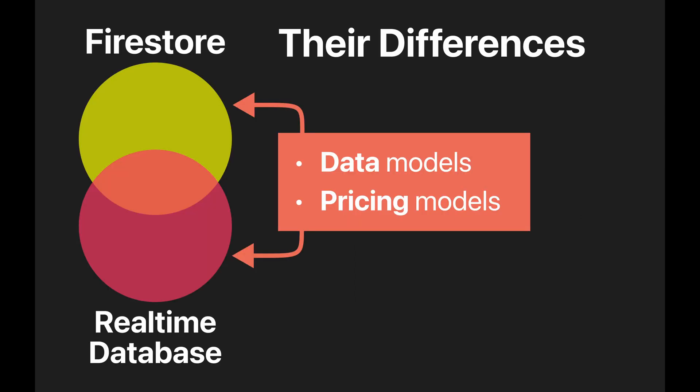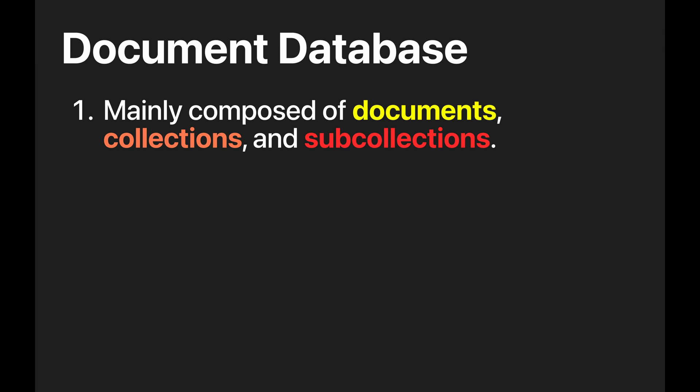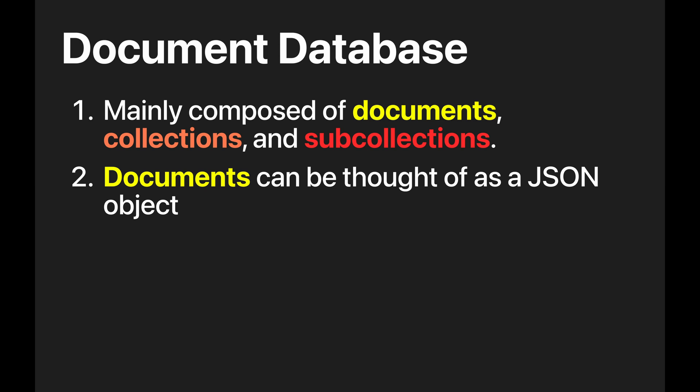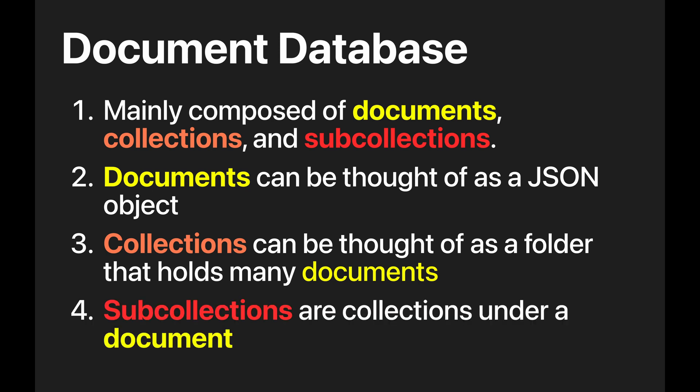The two main differences of the two databases are data and pricing models. Firstly, Cloud Firestore is a document database. A document database is mainly composed of documents, collections, and sub-collections. Documents can be thought of as a JSON object with a few more data types sprinkled in. Collections can be thought of as a folder that holds many documents. And sub-collections are collections under a document. Because of these organizational concepts, Firestore offers scalable solutions for all types of projects.